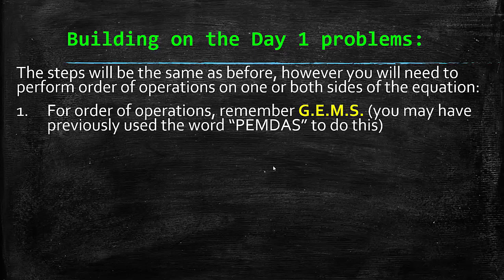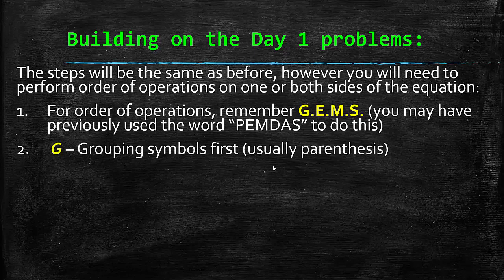Just a quick recap on order of operations. Remember GEMS, G-E-M-S. You probably have heard PEMDAS before. I prefer GEMS for this reason. G stands for grouping symbols first. You start off by eliminating those, usually by either combining things inside parentheses or grouping symbols, or doing the distributive property.